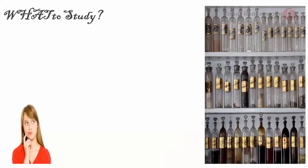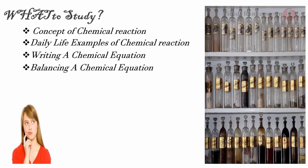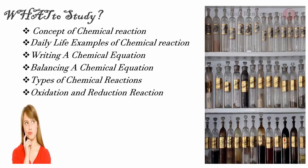Here are the topics we are going to learn in this chapter. First, we will be introduced to chemical reactions. Then, we will see some daily life examples of chemical reactions. Also, we will know how to write a chemical equation and balance it. We will discuss types of chemical reactions.